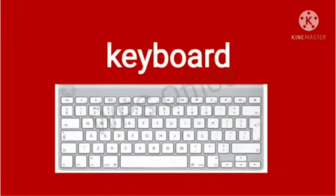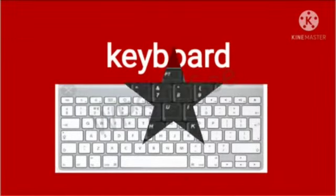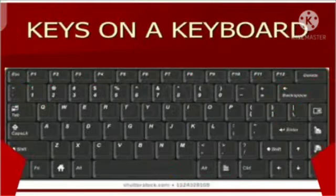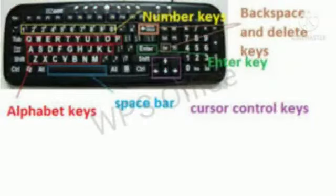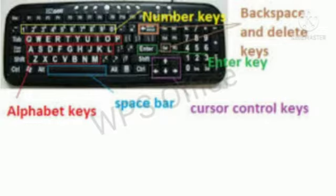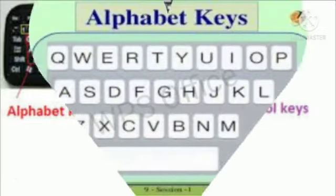In this video, we are going to see about the usage of keyboard keys. Buttons on a keyboard are called keys. We can type letters and numbers by simply pressing these keys. The different types of keys on the keyboard are alphabetic keys, number keys, function keys, special keys, and arrow keys.